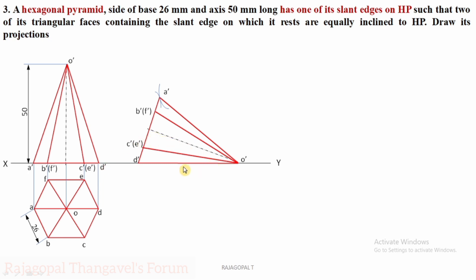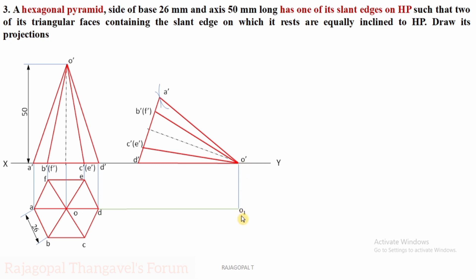Now step number 4. Family members of the same family meet at one point. We start from A'-dash, O'-dash. O'-dash D'-dash is the first slant edge on HP. From O'-dash, extend the projector — all O' members meeting at this point — mark it as O1.